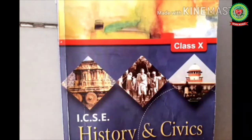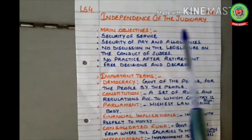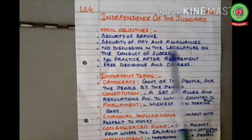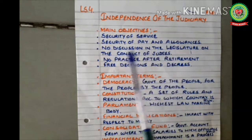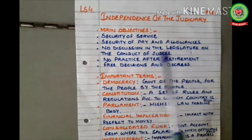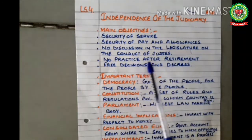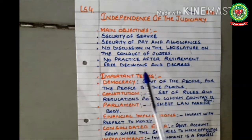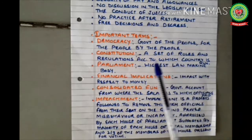In class 9th today we are going to start with the Independence of Judiciary, which is a part of Lesson 4, page 48. The main objectives are: security of service, security of pay and allowances, no discussion in legislature on the conduct of judges, no practice after retirement, and free decisions and decrees. Before discussion of the topic, we must know the following terms.